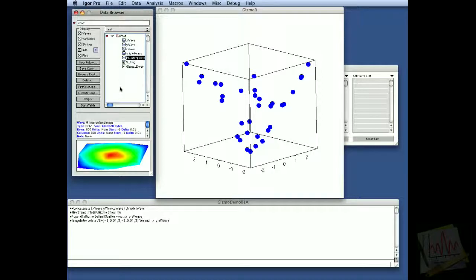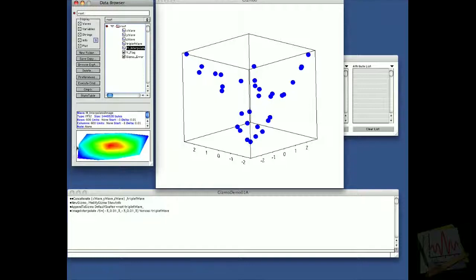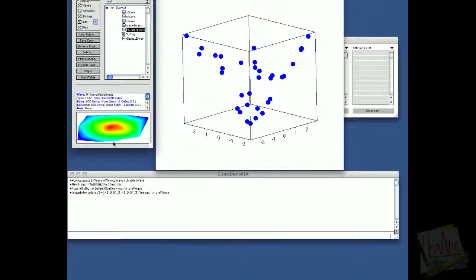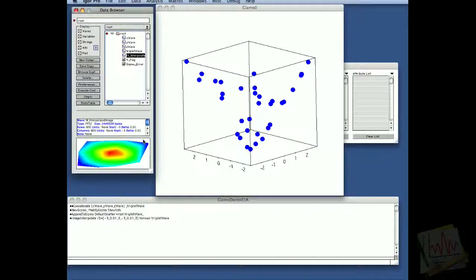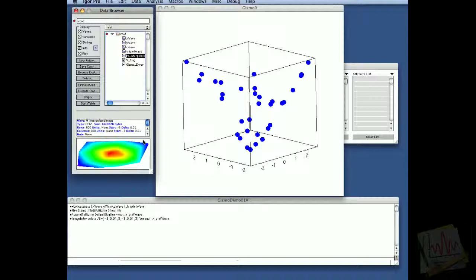If you examine the image here in the data browser, you will notice that there is a region of white values around the interpolated image. The reason for that is that the interpolation method creates first the convex domain that bounds all the data. Outside this convex domain, the interpolation is not valid, so the results for the range that we asked for, the minus 3 to 3, is going to be a NAN value or not a number, basically saying that the interpolation result is not valid outside that convex domain.